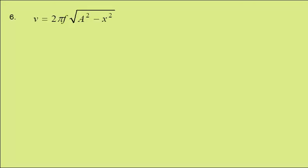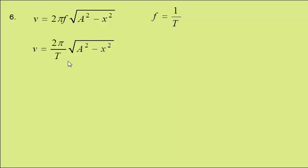From the formula sheet, speed is given by 2 pi f root a squared minus x squared, where f is the frequency, a the amplitude, and x the displacement. Frequency is 1 over time period, which we can substitute in to get this expression.